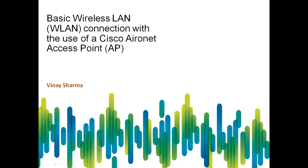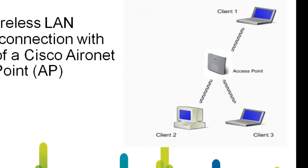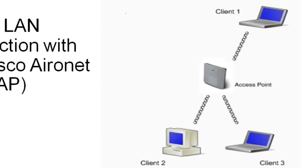In this example we use an access point that has integrated antennas. If you use an access point which requires an external antenna, ensure that the antennas are connected to the access point. Otherwise the access point is unable to connect to the wireless network.